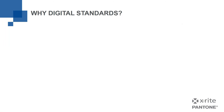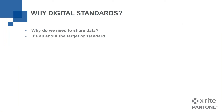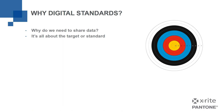We're going to start by talking about why we would use a digital standard and why we need to share that data. It really boils down to this: it's all about the target, or the standard, whatever you want to call it. We've got to make sure we're all shooting for the same thing, like an archery target. Our color standard falls right dead center in the bullseye, and maybe our tolerance is everything in the yellow circle.